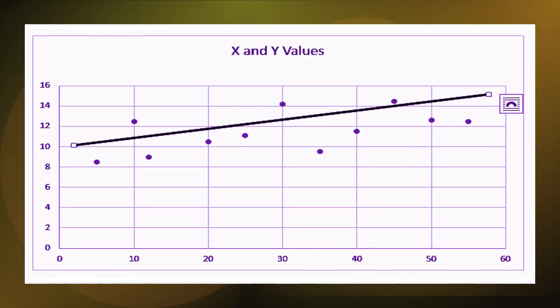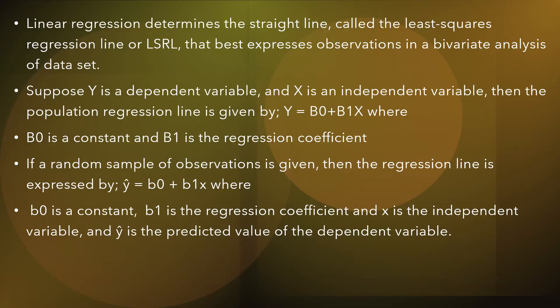The data regression determines a line known as the least squares regression line, or LSRL, which best expresses the observations in a bivariate analysis of data sets. If y is a dependent variable and x is the independent variable, the population regression line is given by y = B0 + B1·x, where B0 is a constant and B1 is the regression coefficient. For a random sample, the regression line is expressed as ŷ = b0 + b1·x, where ŷ is the predicted value of the dependent variable.